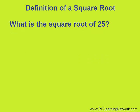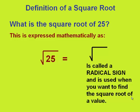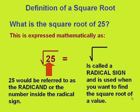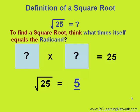What would the square root of 25 be? This is expressed mathematically as shown below. That symbol in front of the 25 is called a radical sign and is used when you want to find the square root of a number. The 25 would then be referred to as the radicand, or the number inside the radical. To find a square root, you think: what times itself equals the radicand? Or in this case, what times itself equals 25? The square root of 25 is equal to that value, and that value is 5, because 5 times 5 equals 25.